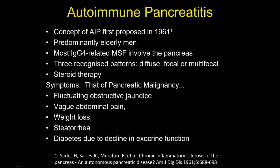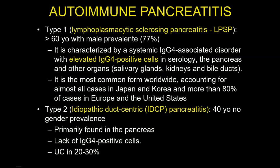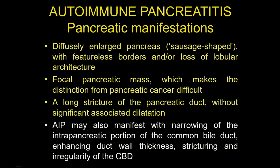Autoimmune pancreatitis is a quite new disease, first described in 1961. It is an IgG4-related disease. Unfortunately, symptoms can simulate pancreatic malignancy — we can have pain, weight loss, and sometimes jaundice. There are two types: Type 1, which is the typical presentation with elevated IgG4, and Type 2, with no IgG4 elevation. Type 1 is the more frequent form.